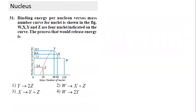Let's understand a binding energy per nucleon curve question. A hypothetical curve is given showing binding energy per nucleon versus mass number for four nuclei X, Y, Z, and W. For example, Y has 60 nucleons and may split into two Z nuclei each of 30. The question is whether energy gets released.